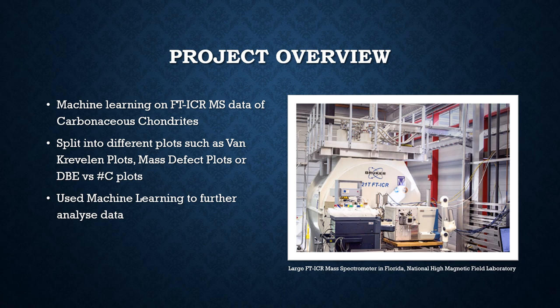The aim of this project is to use machine learning techniques on data from FT-ICOR mass spectrometry on carbonaceous chondroids to investigate their role in the beginning or the advancement of life on Earth. Mass spectrometry is a precise technique used to get the mass-to-charge ratio of ions using magnetic fields. There's a photo on the right-hand side of this slide that shows the large FT-ICOR mass spectrometry in the Florida National High Magnetic Field Laboratory. That's the specific machine that we got our data for this project from.